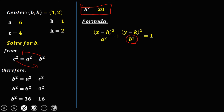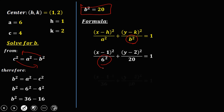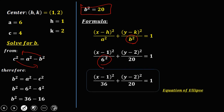Substitute all values into the standard equation. With h = 1, k = 2, a² = 36, and b² = 20, we get: (x - 1)²/36 + (y - 2)²/20 = 1. This is the standard equation of the ellipse.